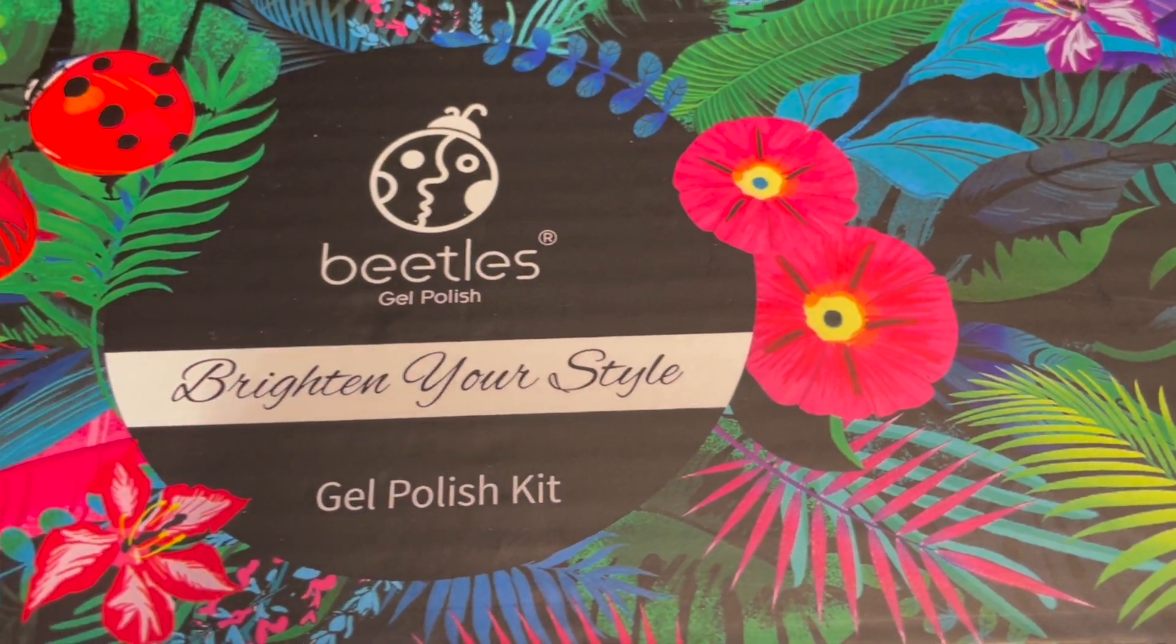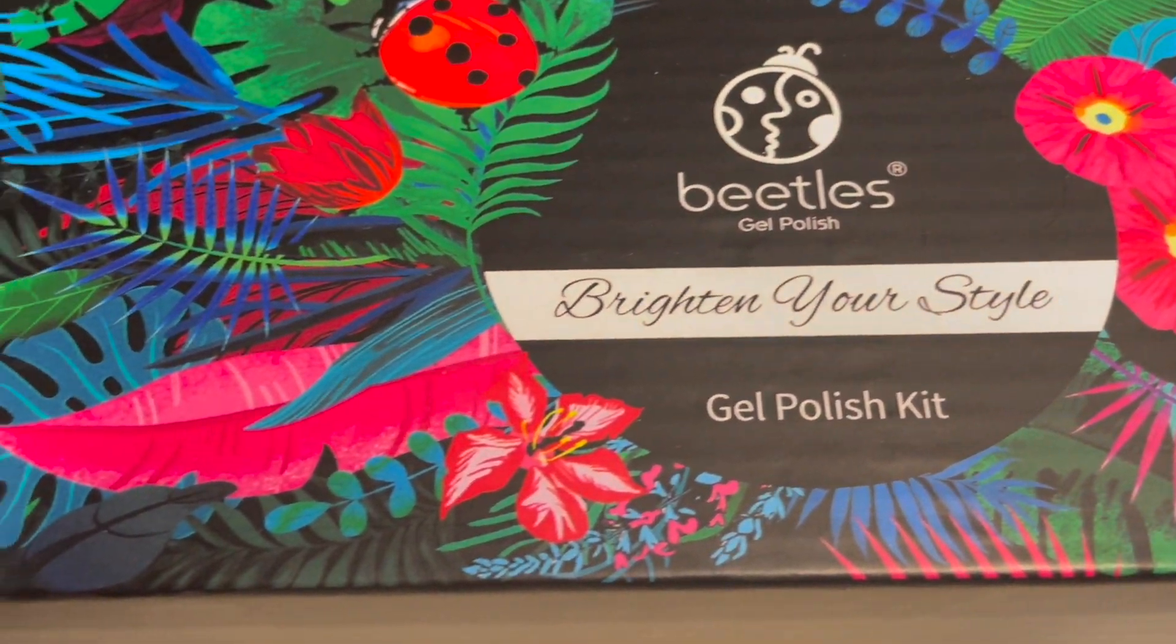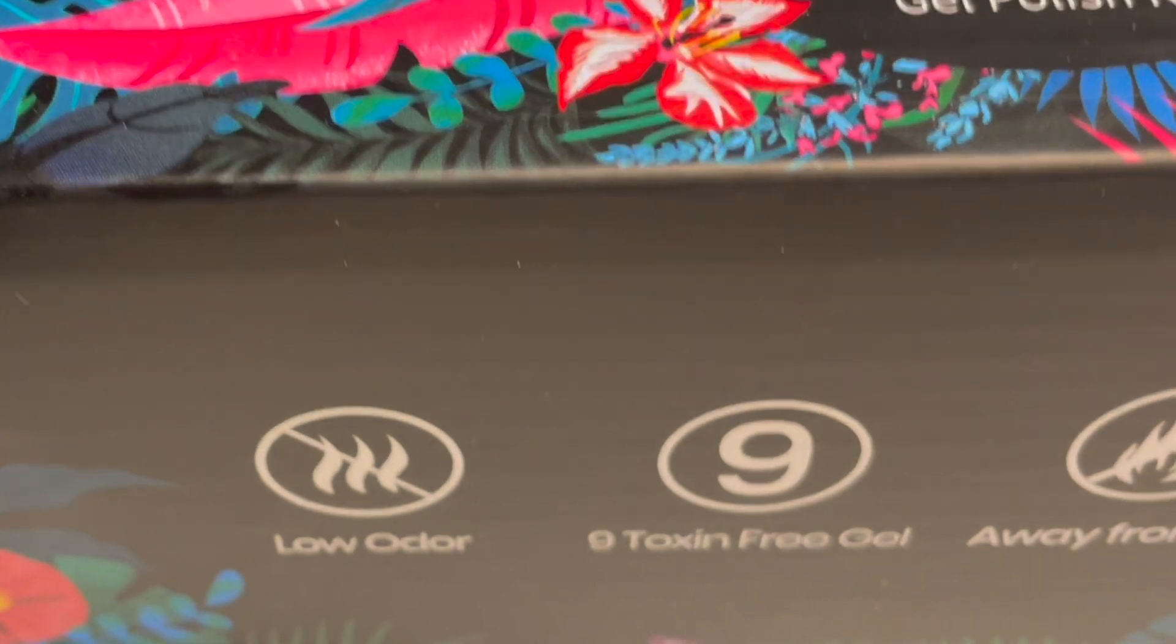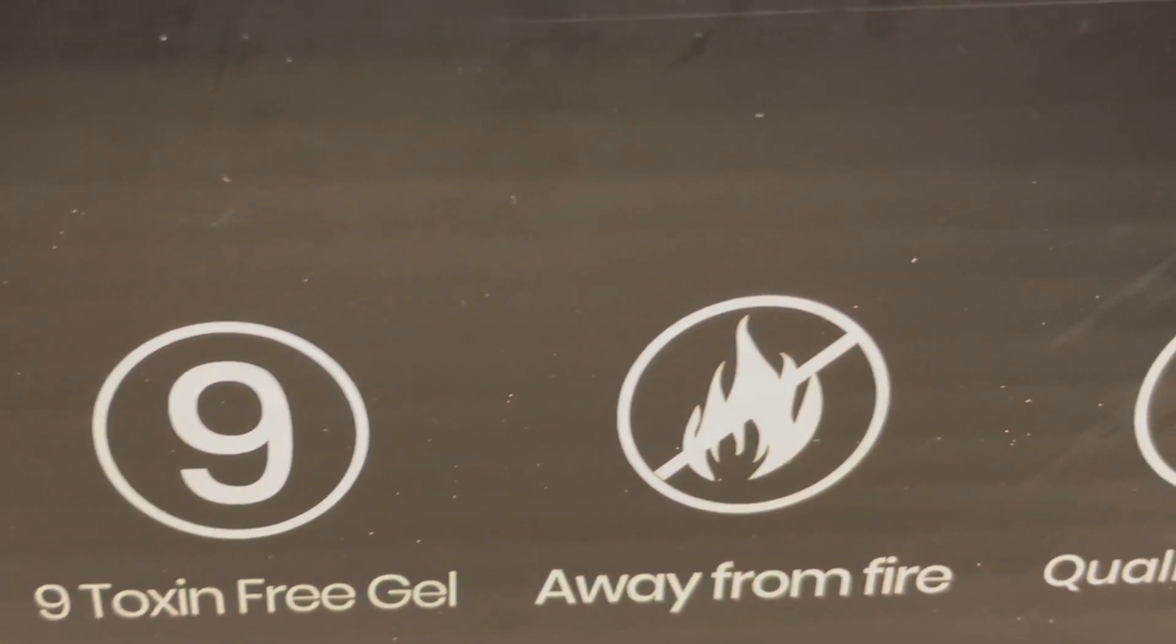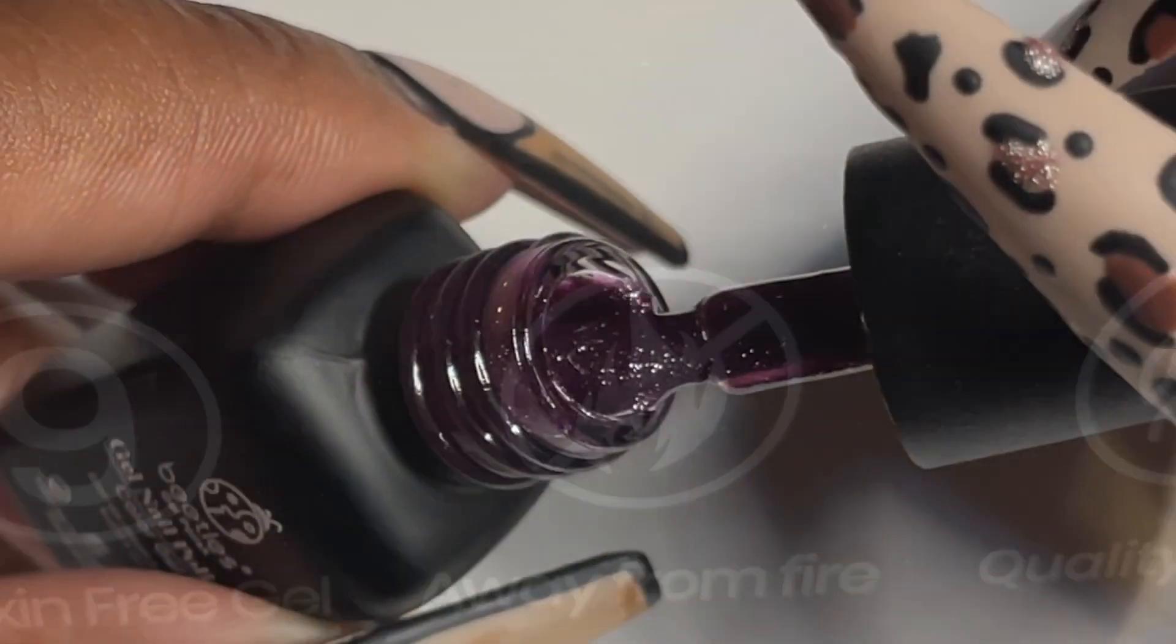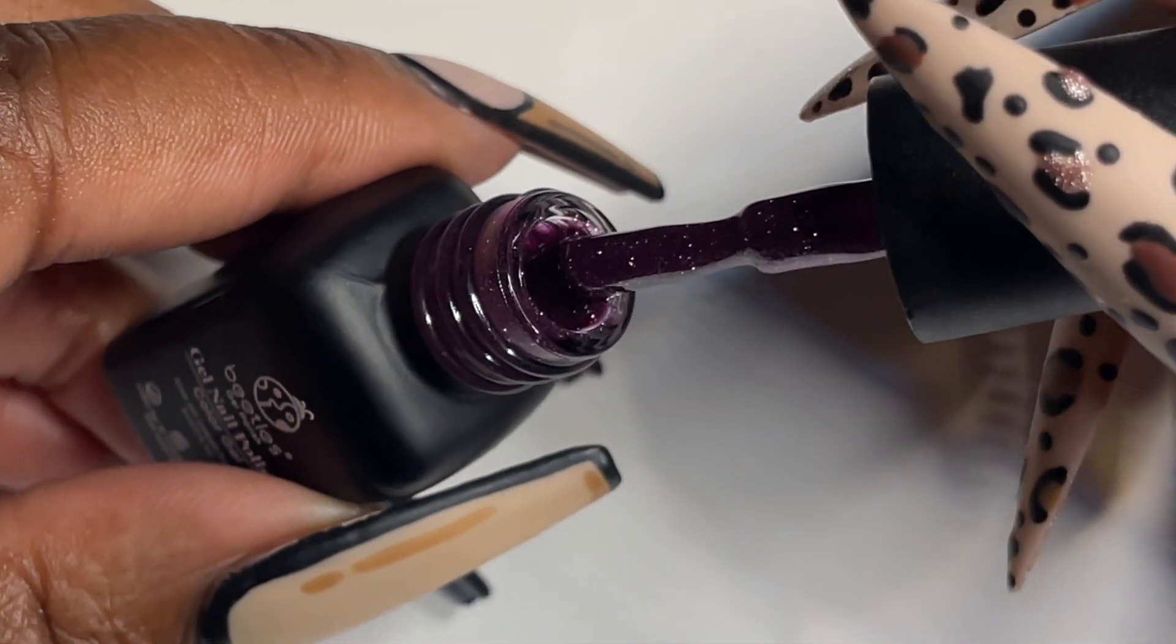What's good, what's good, it's your girl The Best Follower back again with another video. This is the Brighten Your Style Beetles gel polish kit that I got from an auction here in Cleveland, Ohio. It comes with 22 polishes including a base and a top coat.